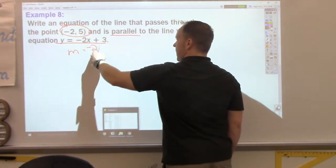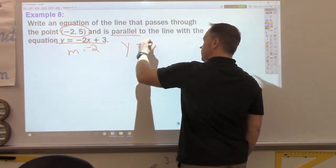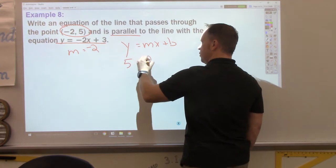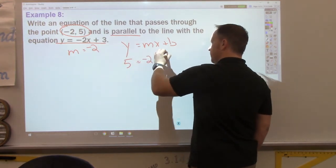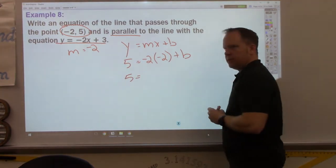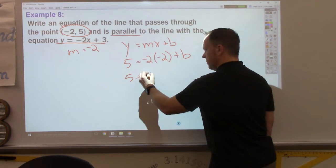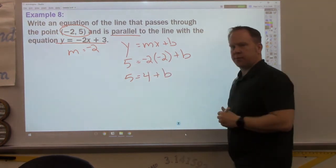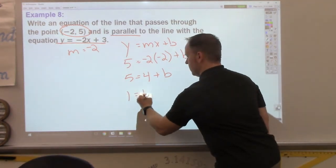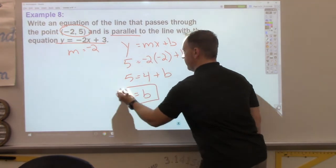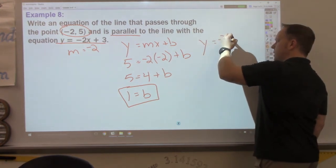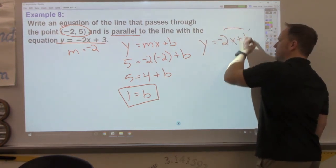x, y, and m solve for b. So, I have 5 equals negative 2 times negative 2 plus b. Negative 2 times negative 2 is a positive 4. Subtract 4 from both sides. Go ahead. I'll wait for you to put it in your calculator. 1 equals b. Again, final step. Plug everything in. y equals negative 2x plus 1. Finished.